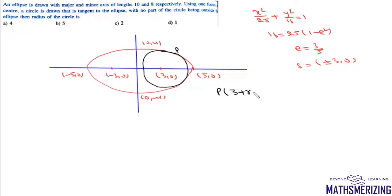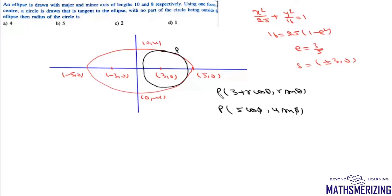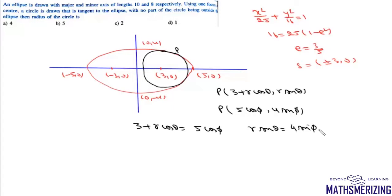A point on the circle centered at (3, 0) can be written as (3 + r cosθ, r sinθ). The parametric coordinates for the ellipse are (5 cosφ, 4 sinφ). Since these represent the same point, we set 3 + r cosθ = 5 cosφ and r sinθ = 4 sinφ.